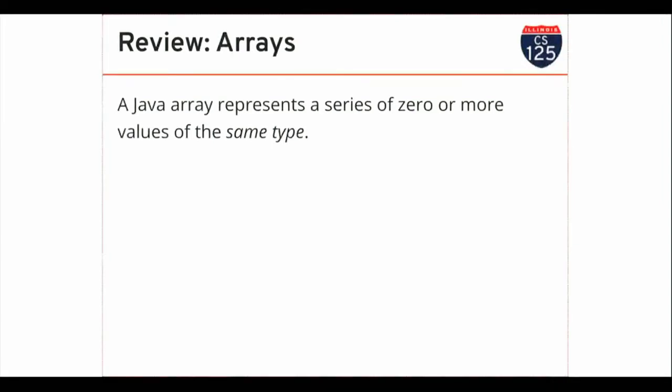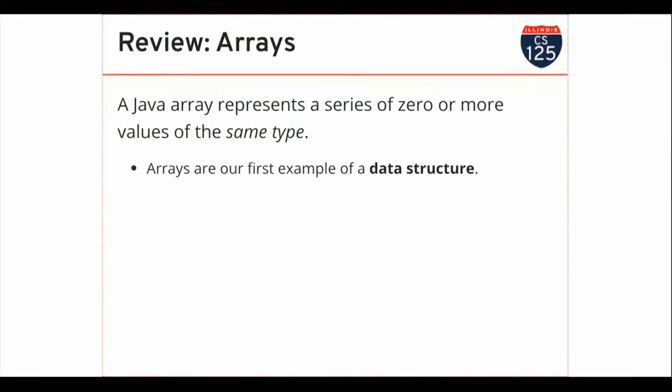So a Java array represents zero or more values of the same type. It's unusual to create an empty Java array, but you can. It allows me to take a series of data and structure it. This was our first example of a data structure — it takes a bunch of integers or characters and structures them, puts them in order. You can think about a book: if I take all the letters you need to write any famous book and jumble them up, I don't have the book anymore.